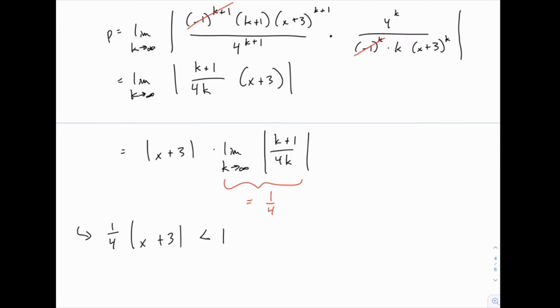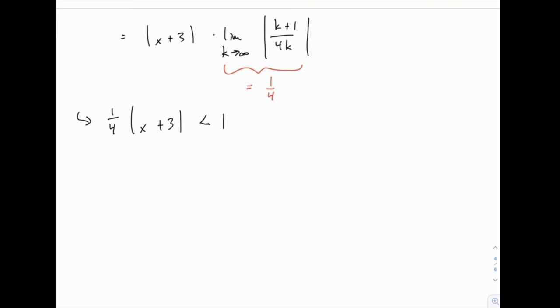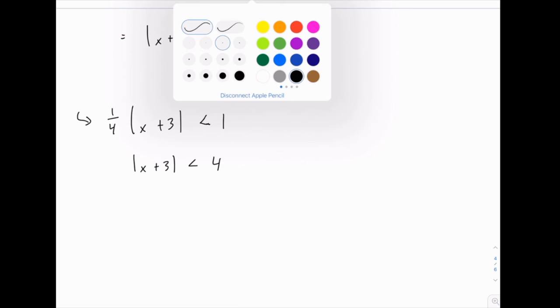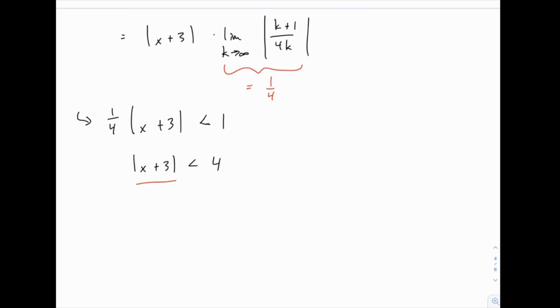And now we just need to interpret what this means. In other words, we need to find the x values that satisfy this inequality. The easiest way I have to do it again, first we'll multiply both sides by 4 to get rid of that fraction. So x plus 3, the absolute value needs to be less than 4. And then again, I'll interpret this as x minus negative 3 means the distance between x and negative 3.